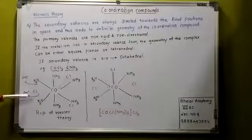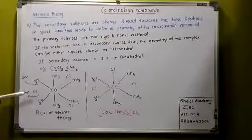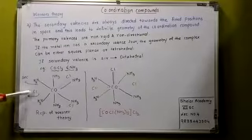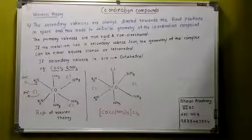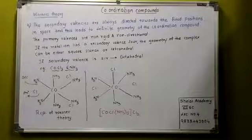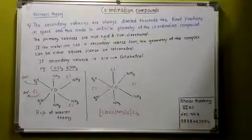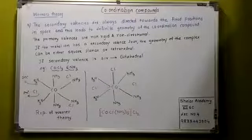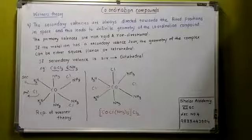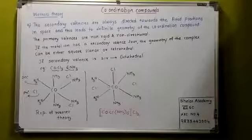Now these 3 chloride ions are ionizable. And therefore they get precipitated on addition of silver nitrate. If you react this with silver nitrate, then it will give 3 chloride ions precipitation. The central metal ion and the neutral molecules satisfy the secondary valence, they are written in the square bracket. So it may be written in this way. The primary valences are ionizable and hence they get precipitated when dissolved in silver nitrate.